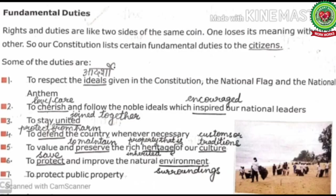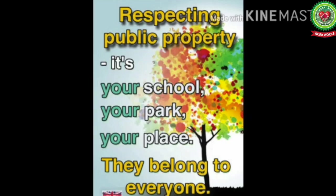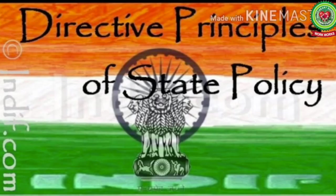Number seven — to protect public property. Public property includes hospitals, schools, parks, roads, and railway stations. These are built by the government for public use. It is our duty to protect public property because it is built for public welfare and is part of the country's infrastructure. Damage to public property affects the country's progress.